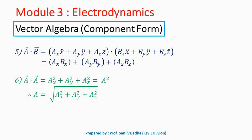The dot product in component form a bar dot b bar is a scalar quantity. The x component of a bar is multiplied with the x component of b bar, then we add the y components multiplied together, and then the z components multiplied together. So a bar dot b bar in component form is ax·bx plus ay·by plus az·bz. If you multiply the same vector with itself via dot product, a bar dot a bar equals ax² plus ay² plus az², which equals a², where a is the magnitude of a bar, given by the square root of ax² plus ay² plus az².